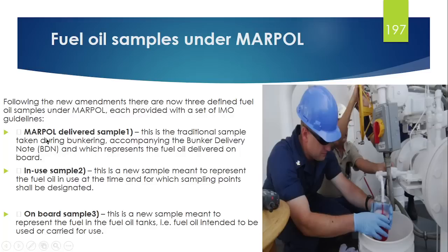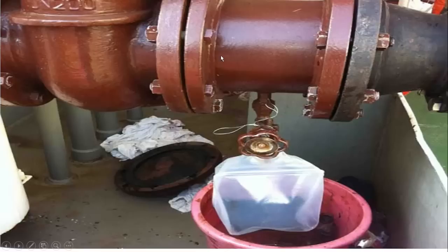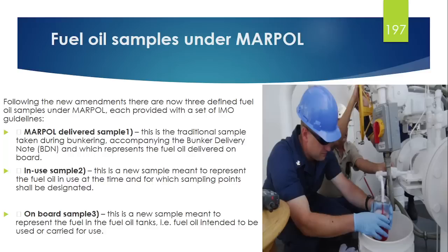The first is the MARPOL Delivered Sample. When you are taking bunker, by a continuous dripping process you are collecting a sample. That sample is collected in a sample bag and after that it is transferred to 4 sampling bottles. That sample is called the bunker delivery sample or MARPOL Delivered Sample. It represents that the bunker which you have received on board — that sample is the same as the MARPOL Delivered Sample.